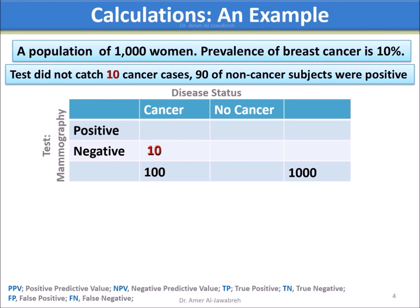If the test did not catch 10 cancer cases, then the cancer-negative cell will be 10. This puts the cancer-positive cell at 100 minus 10, which is 90. Following this, the total of the no-cancer column will be 1,000 minus 100, which is 900. The no-cancer positives were mistakenly 90, leaving the no-cancer negative cell at 900 minus 90, which equals 810.